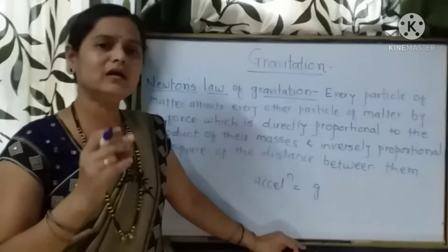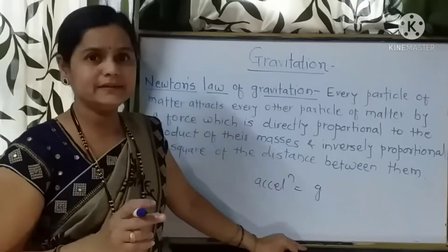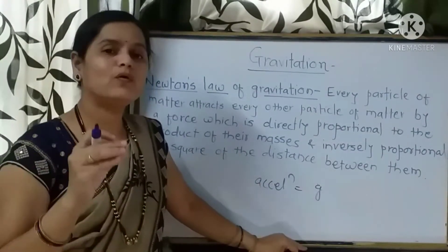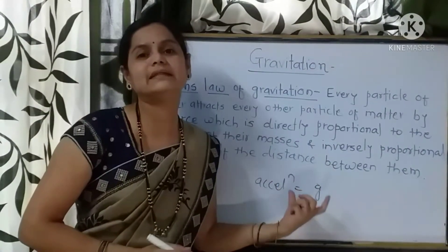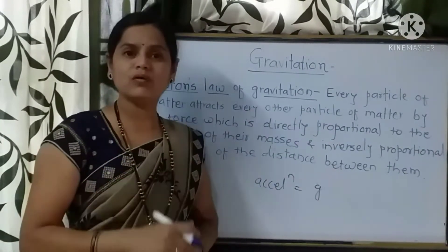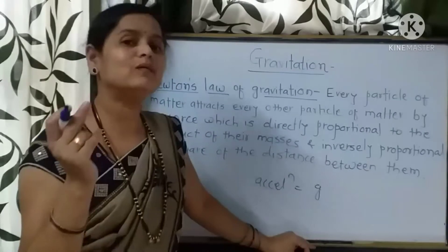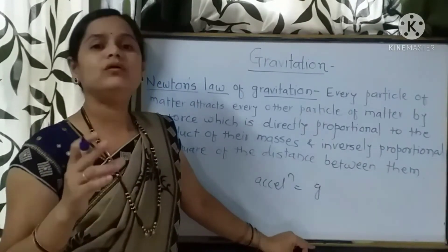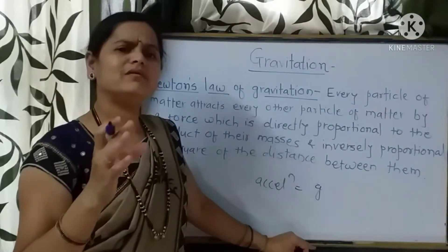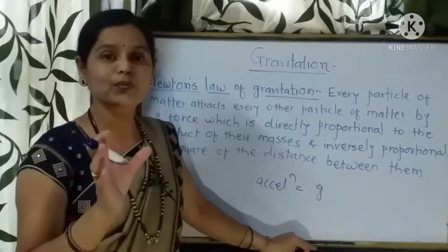That is also something you have studied in your 10th standard. This constant acceleration was described by scientist Aryabhatta, who gave us the idea that any object falls towards the earth with this constant acceleration due to gravity. He also studied the revolution of celestial bodies — that the earth is revolving around the sun and the moon is revolving around the earth. These phenomena are due to the existence of gravitational force.